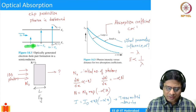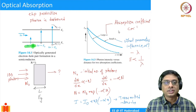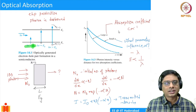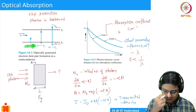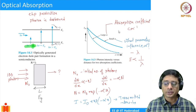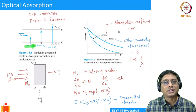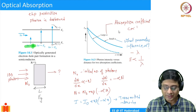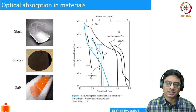There are also secondary effects such as temperature variations and surface smoothness, but we won't go into those. This is how we calculate optical absorption. It helps us understand many things around us — for example, why glasses are transparent.